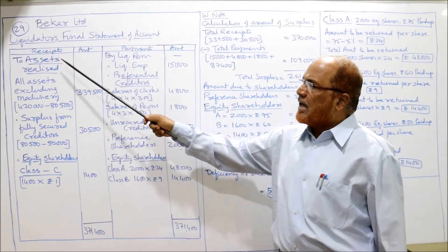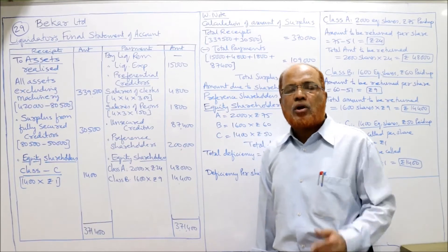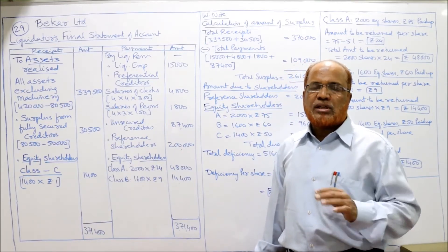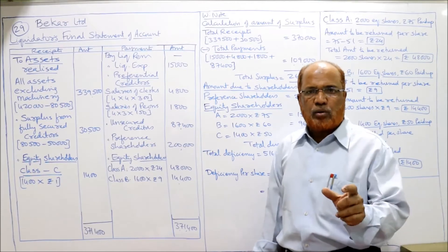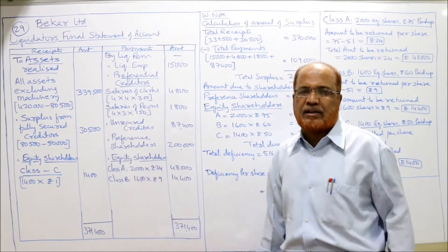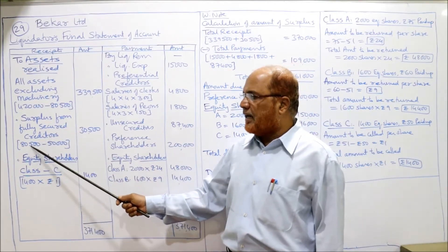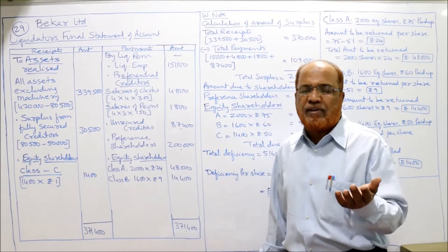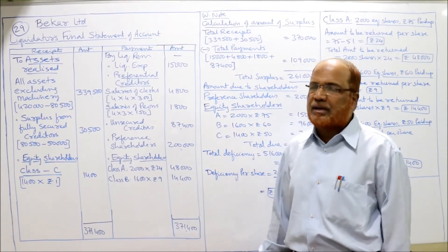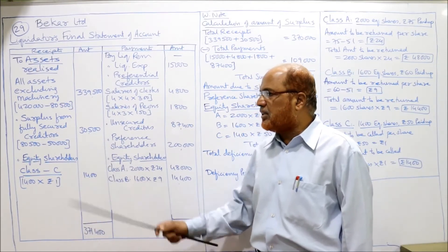In the liquidator's final statement of account, assets realized — excluding machinery since machinery was mortgaged — is 4,20,000 minus 80,000 = 3,40,000. Surplus from fully secured creditor: the realizable value of machinery was 80,000, the loan due to Patel was 50,000, so the liquidator gets a surplus of 30,000.